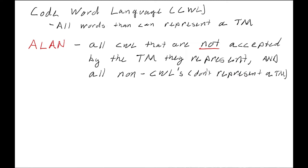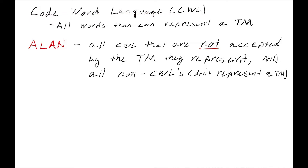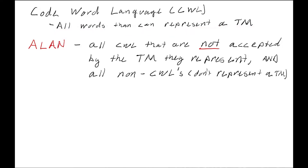Now we're going to talk about a very important language called Allen. To understand Allen, first we need to understand what a codeword language is. A codeword is basically a coded-up Turing machine — it's all words that can represent a Turing machine. Specifically, we're talking about the way that I just coded up a Turing machine, but it can be any sort of word that represents a real Turing machine.